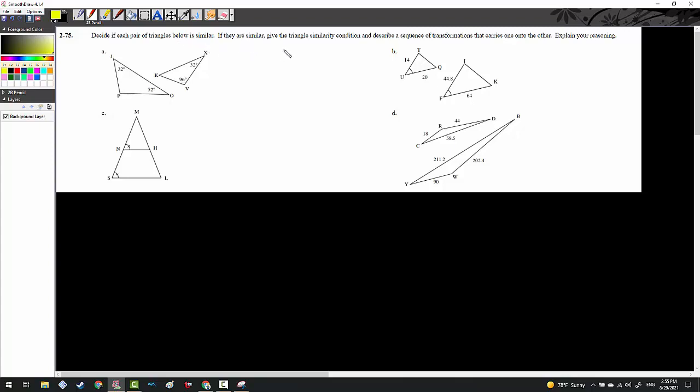It says, decide if each pair of triangles below is similar. If they are, give the triangle a similarity condition and describe the sequence of transformations. Are these two triangles similar? Well, let's find out. If we have triangle JPO, he has two angles in there, 32 degrees and 52 degrees. So if I subtract those from 180, if I do 180 minus 32 minus 52, that's gonna be 96 degrees. So 96 degrees in here. Now that 96 matches this 96, which means this angle K has to be 52 degrees. So from here, we know that angle P is equal to 96, angle K is equal to 52. So I would say, yes, these are similar. I would say, yes, similar by angle-angle. And then you could say that to flip the JPO into KVX, you could flip JPO and shrink him using dilation.